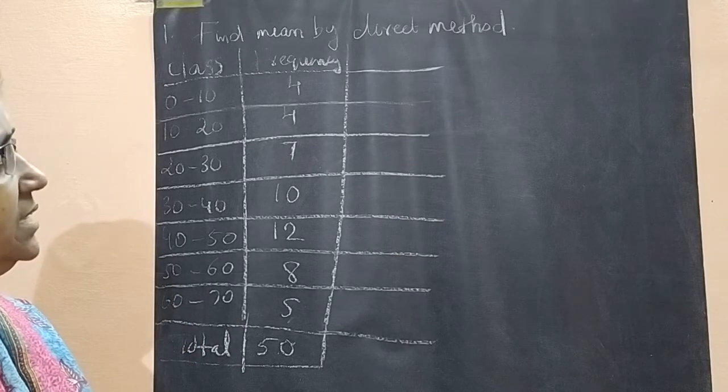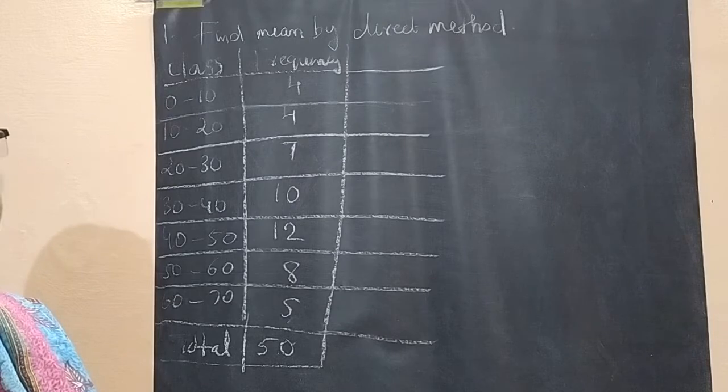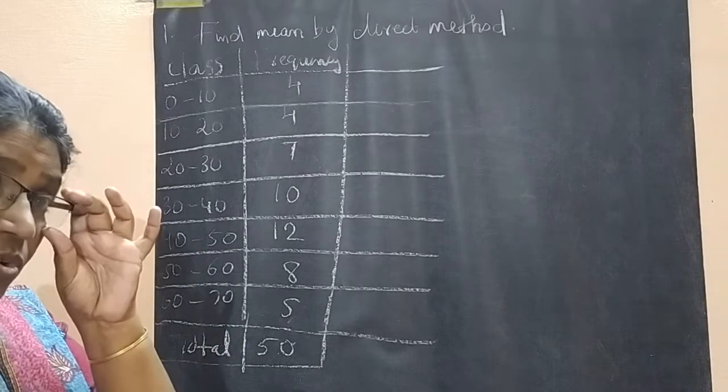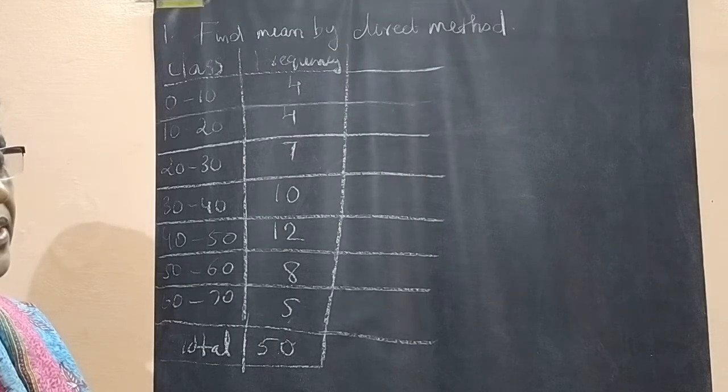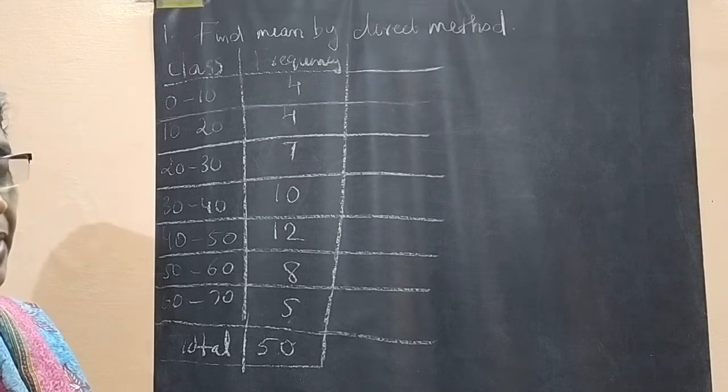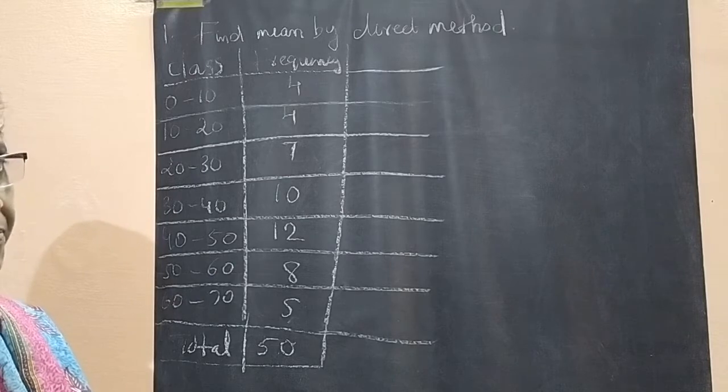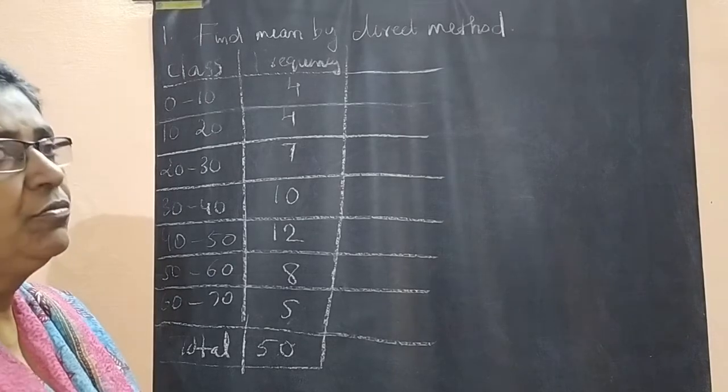The first method is direct method. The direct method formula I told: x̄ = Σ(xi·fi) / N. That is the direct method formula.